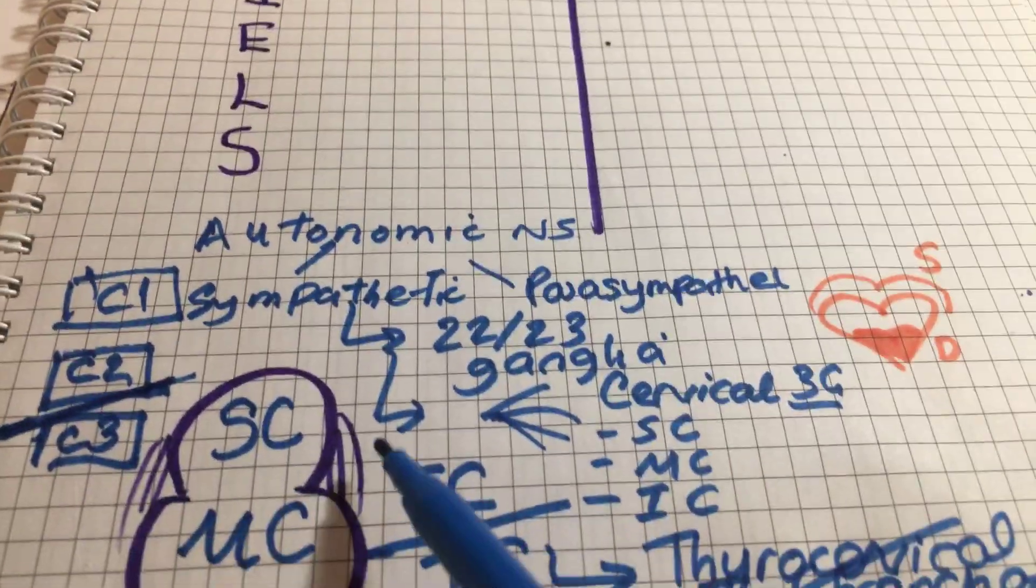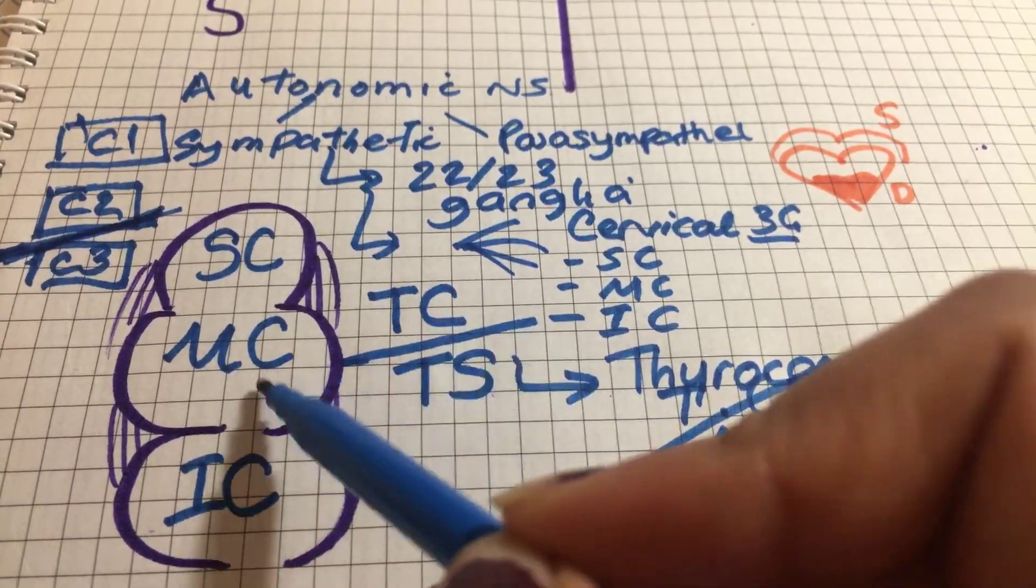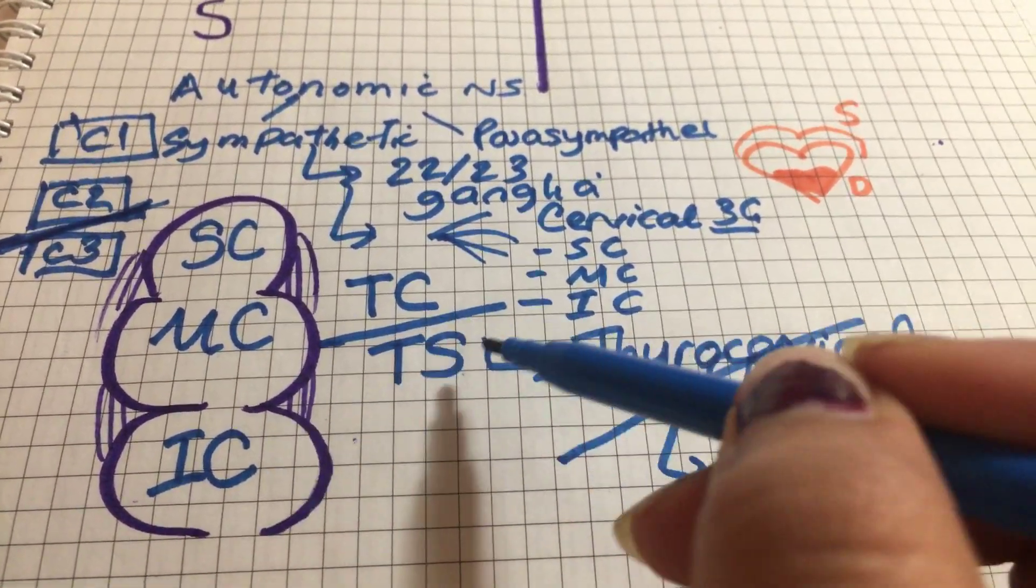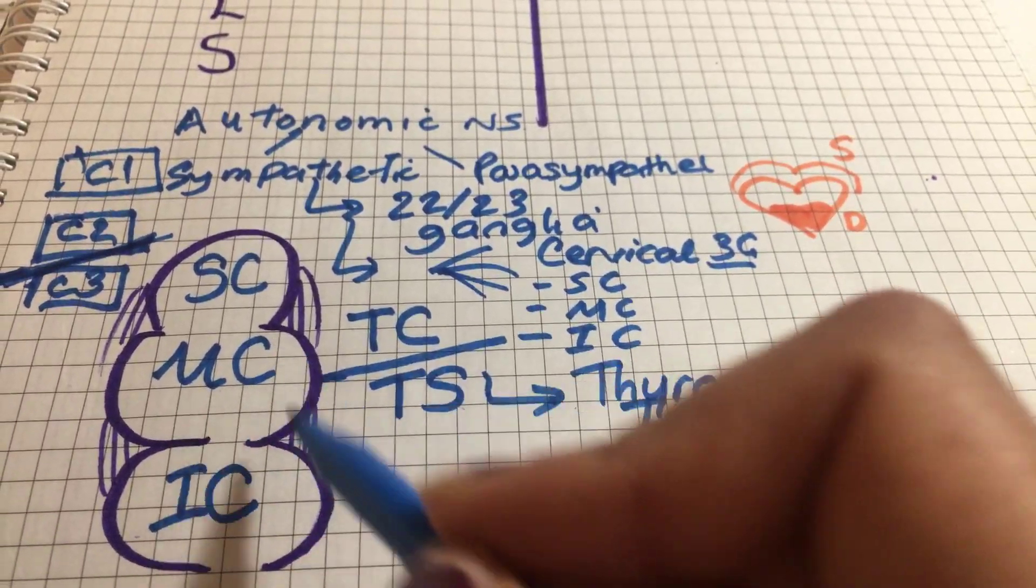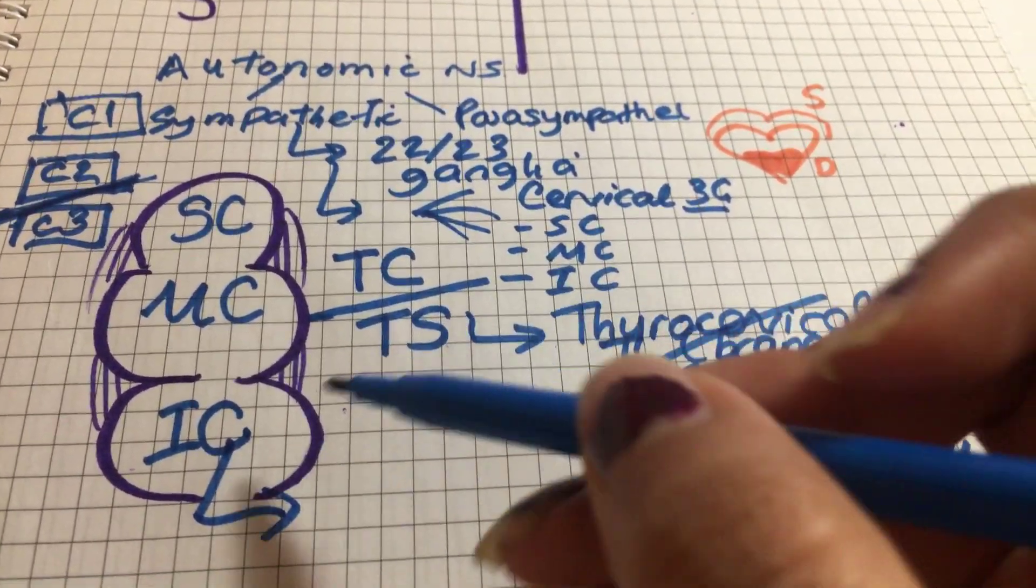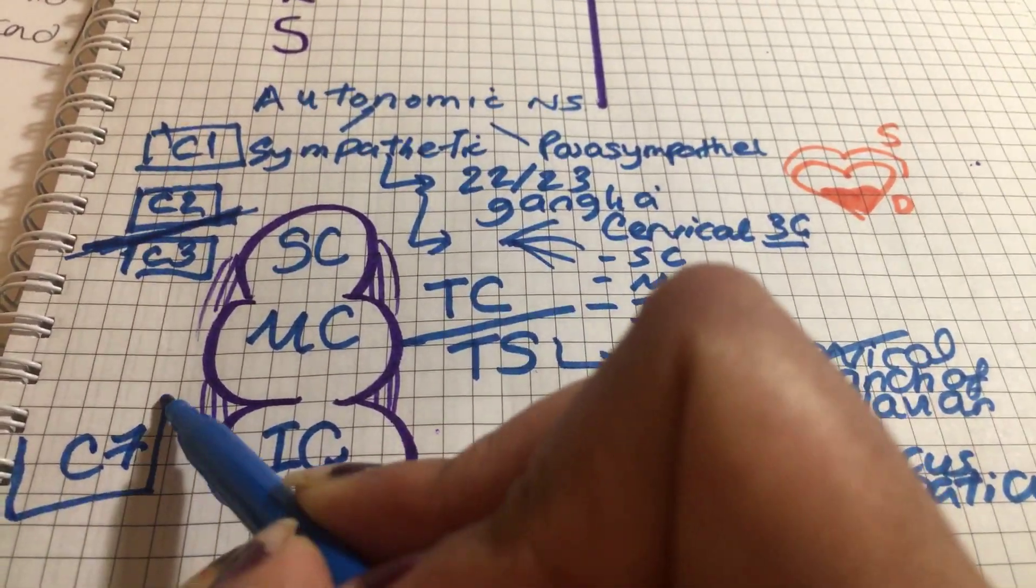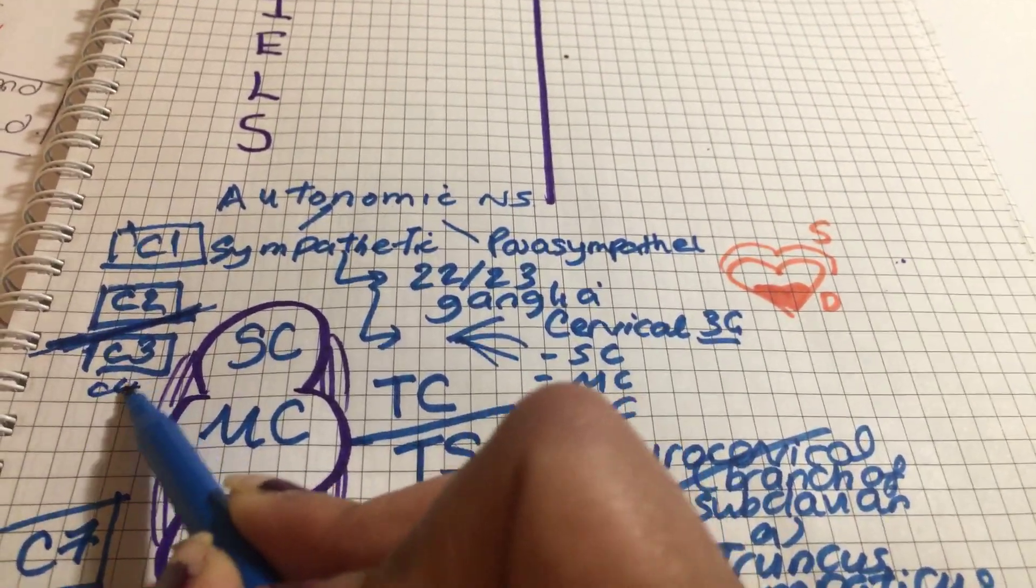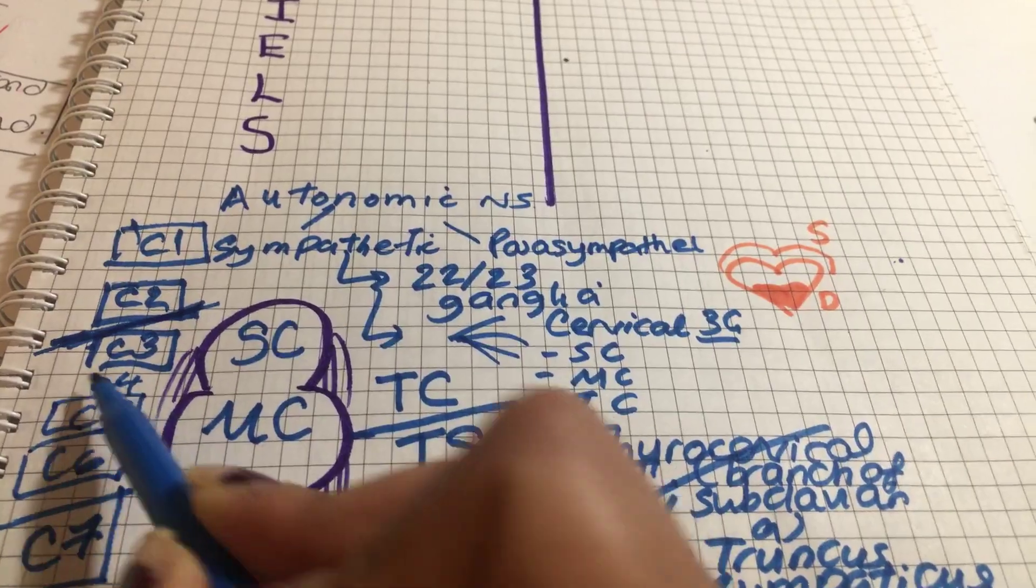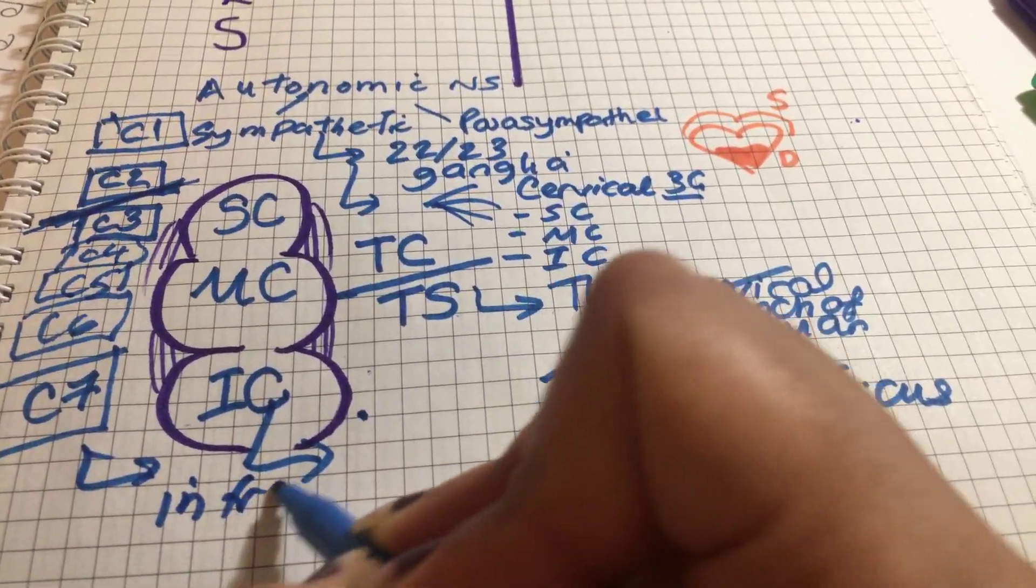So superior cervical ganglion between C2 and C3, middle cervical ganglion between TC and TS, thyrocervical trunk and truncus sympatheticus, and the inferior cervical ganglion is in front of the body of the 7th cervical vertebrae, so in front of the body of C7.